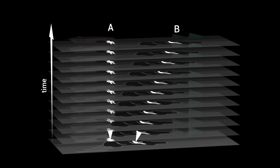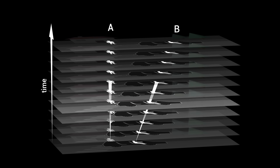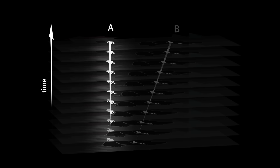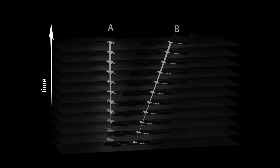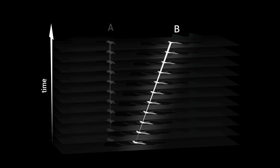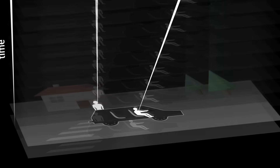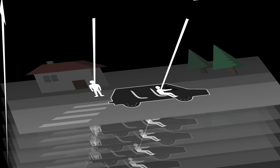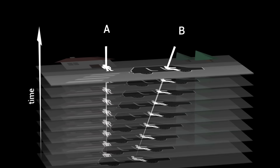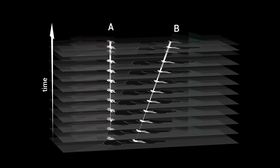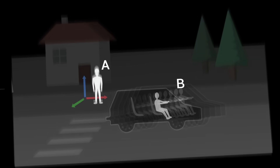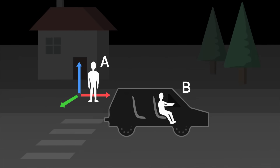In this block, the two persons move towards the future, each drawing their own world line. Person A follows a straight line towards the future, while person B, who is moving, traces a tilted path. Each slice of the diagram pinpoints their location at a given time. The situation is described from the point of view of the road, in the reference frame of person A.